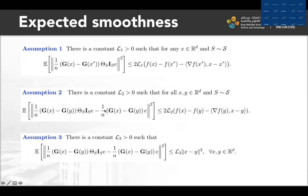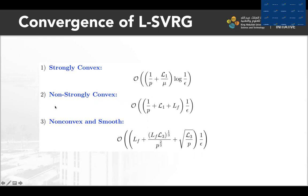These are the expected smoothness assumptions. These constants L1, L2, and L3 are decided by the sampling and will affect the convergence rate. This is the convergence results of L-SVRG in these three different cases.